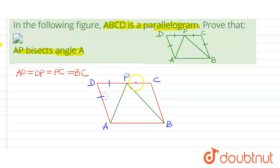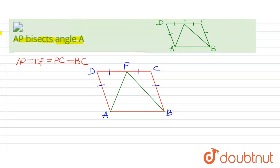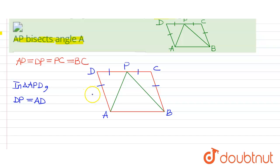Now as we can see in triangle APD, DP equals AD. So that implies the angles DAP and DPA should be equal to each other — that is, angle DAP equals angle DPA.